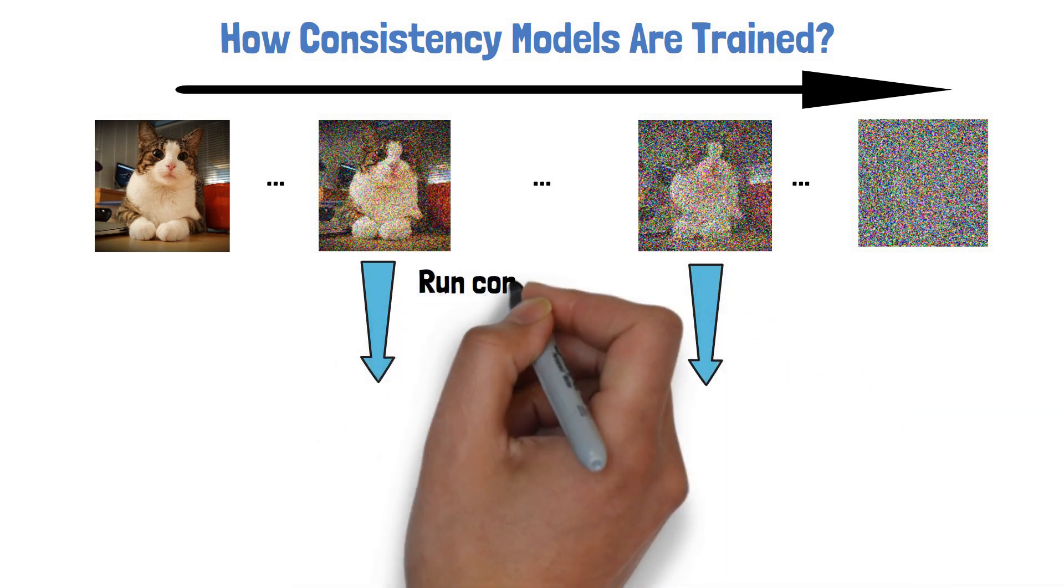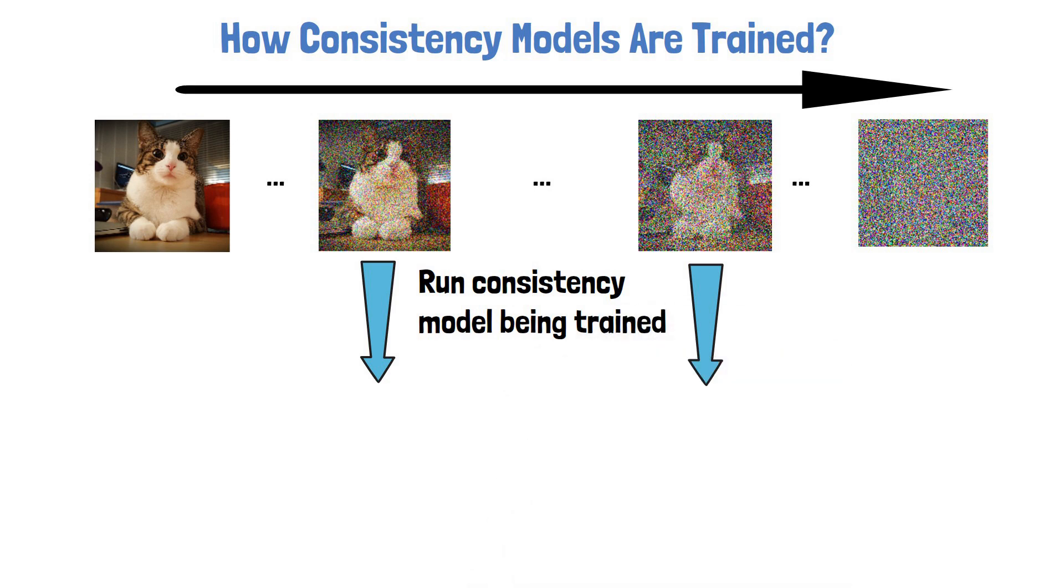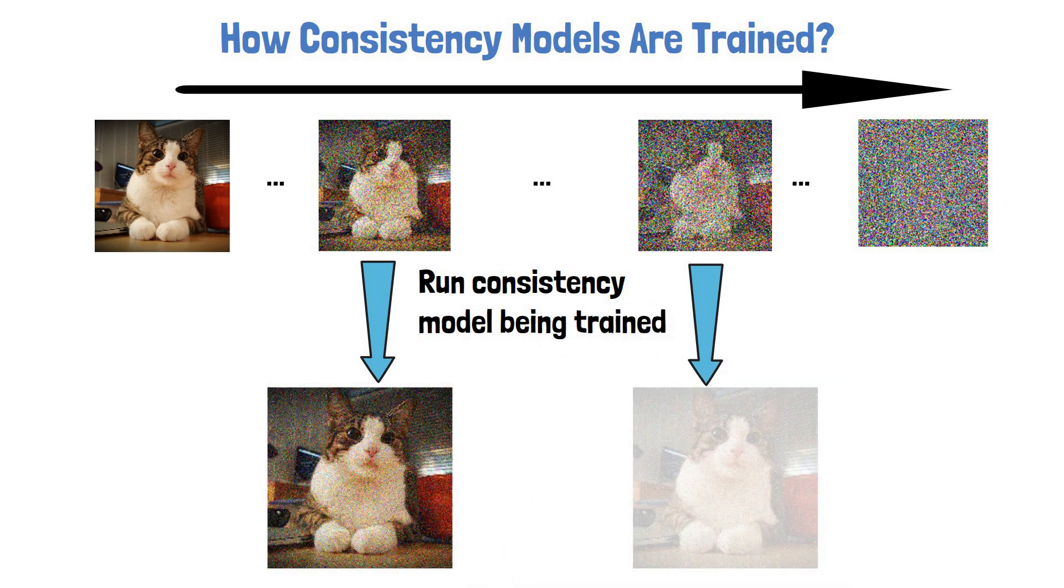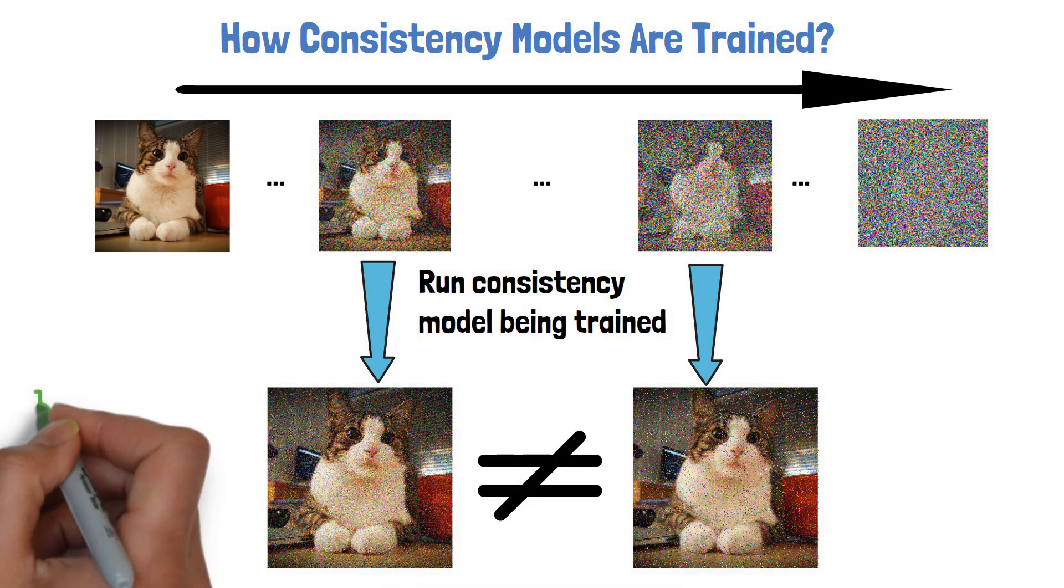During training, the model is running on each of them to try and restore the original cat image, and each produce a result which is not identical to the other, even if it's similar.